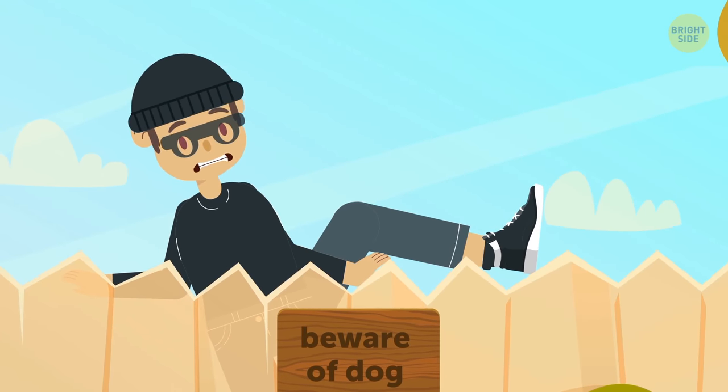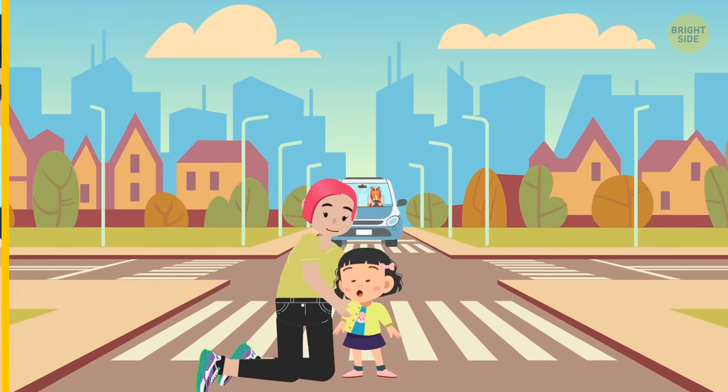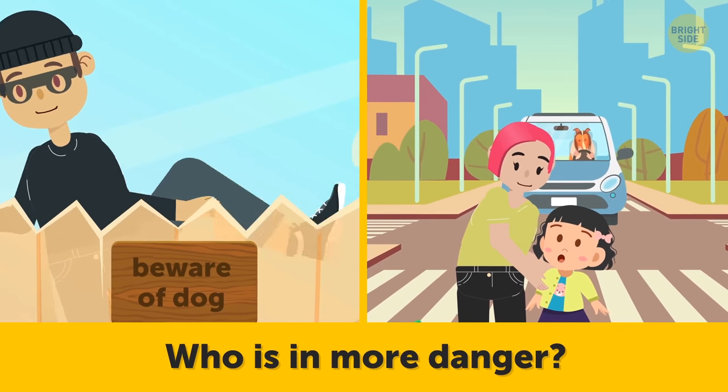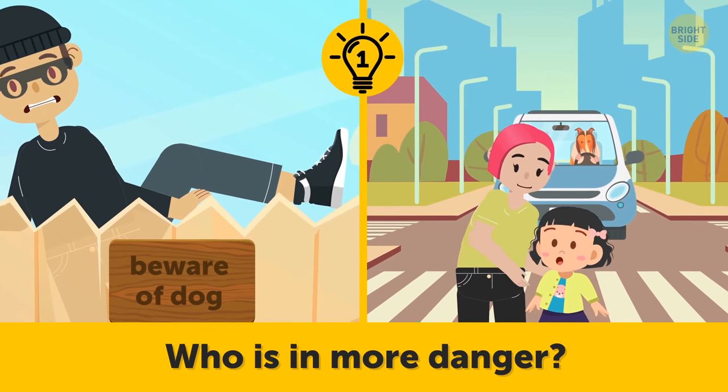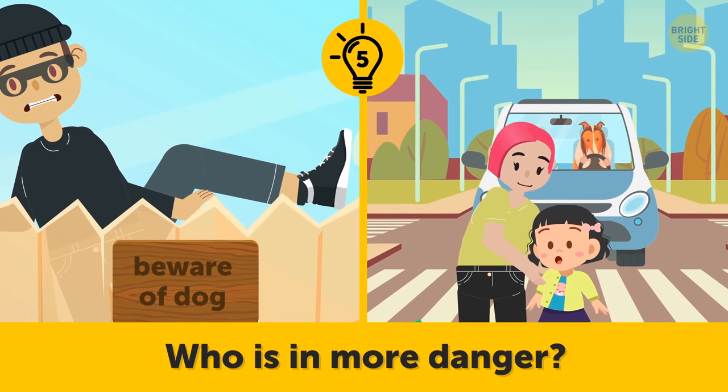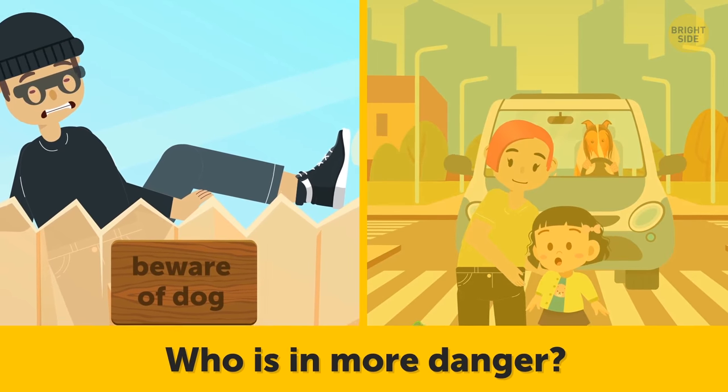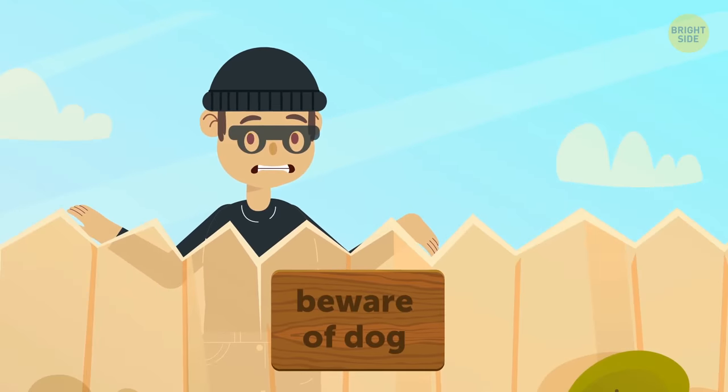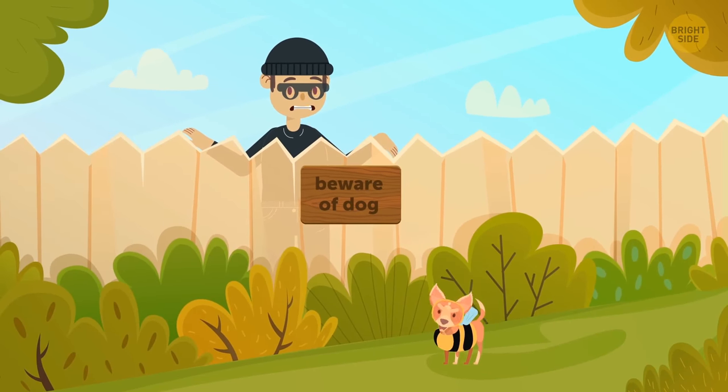Michael is ready to break into a house that has a dog. Karen is putting the jacket on her daughter in the middle of the street. Who is in more danger? Karen and her daughter. They're kneeling and don't see the car approaching. While Michael can spot if there's a dog in the yard or not.